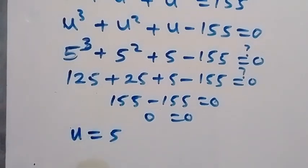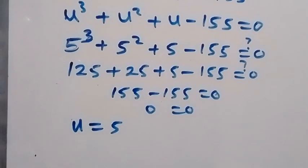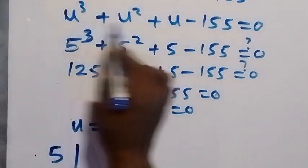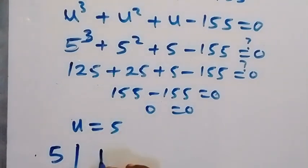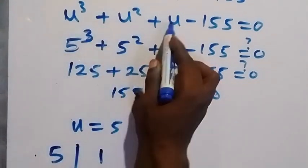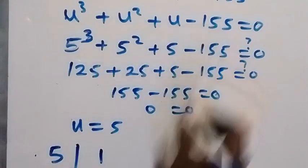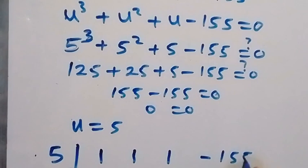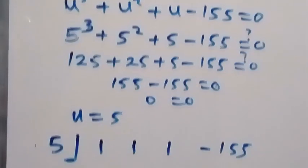Then we can use synthetic division to get the other factors. We divide by 5, and the coefficients of this polynomial are 1, 1, 1, then minus 155. This method is called synthetic division.